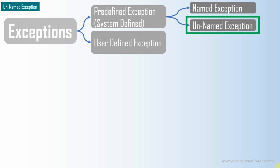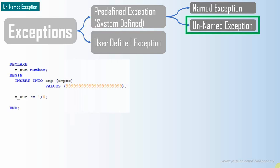Since an unnamed exception doesn't have a name, we will not be able to handle it with a particular name. So if there is any unnamed exception, by default we use the OTHERS exception class. But if you want to handle one particular unnamed exception separately, you need to distinguish it from OTHERS.